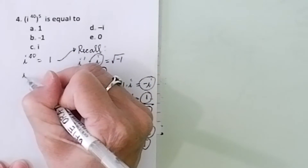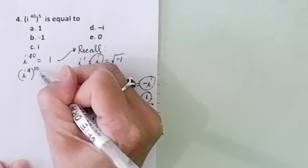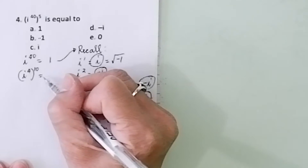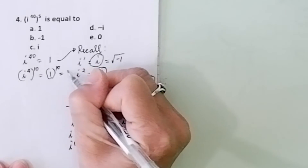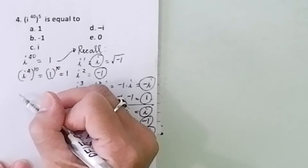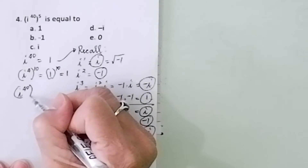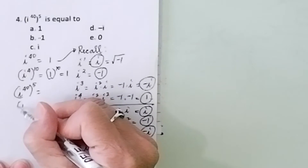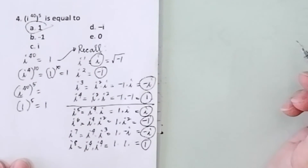Or you can think of it this way: i to the 4th raised to the 10th — i to the 4th is 1, and 1 raised to the 10th is still 1. So since i to the 4t equals 1, raising that to the 5th gives you 1 raised to the 5th, which is still 1. Final answer is 1.